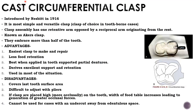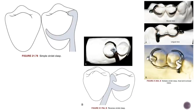Types of cast circumferential clasp — Simple circulate: most widely used, best for tooth-supported partial dentures. It approaches the undercut from the edentulous space and engages the undercut located away from the edentulous space. It should be adjusted only buccolingually, not in the occlusal-gingival direction, and cannot be used for distal extension cases (Kennedy's Class I and Class II).